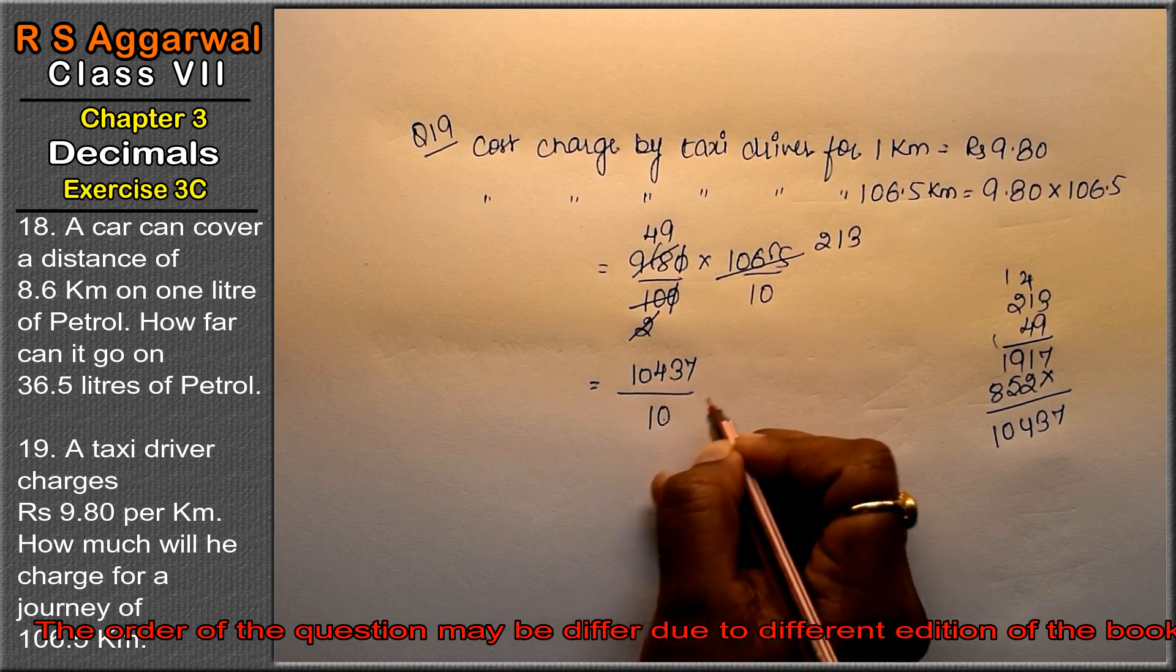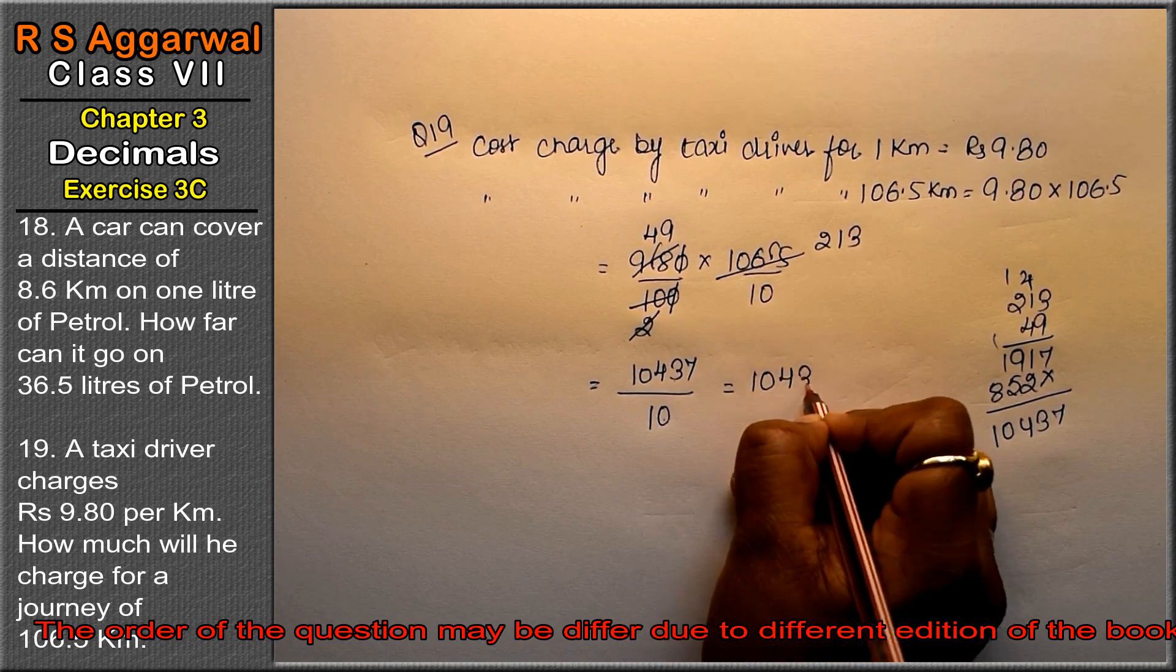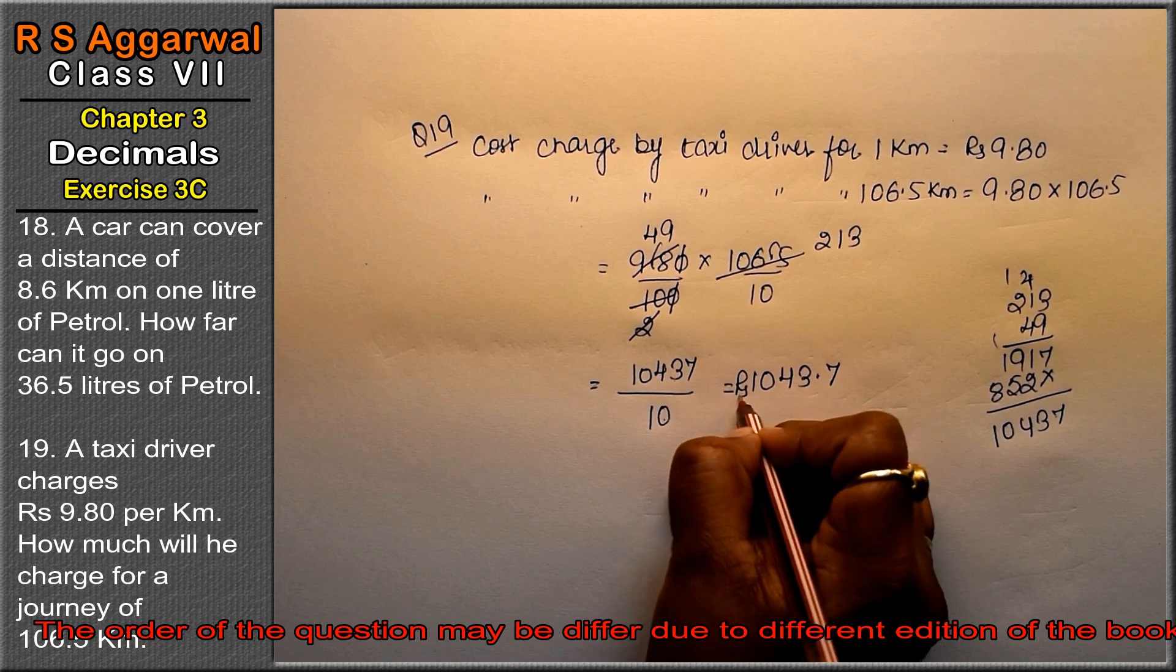Upon 10. So there's a zero, so after 1, point will come. 1,043.70 rupees is the answer.